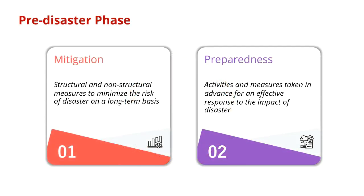When looking at the pre-disaster phases, these include mitigation or prevention and preparedness. We usually focus more on mitigation rather than prevention, because the word prevention can give a false hope that you can prevent a natural hazard from happening. Mitigation can be divided into two different types of measures — structural and non-structural — to minimize the risk of disasters on a long-term basis.